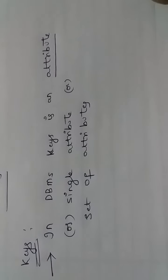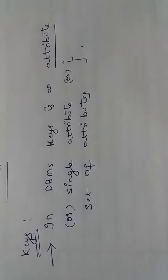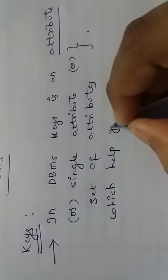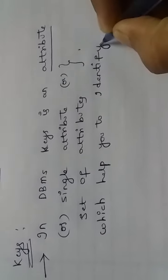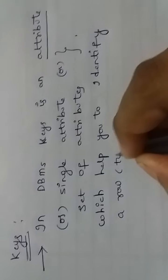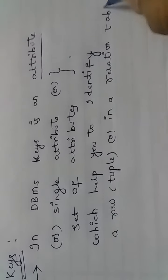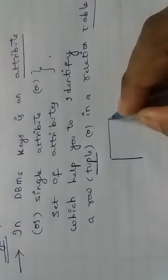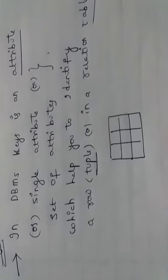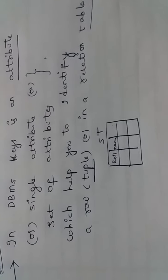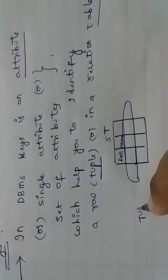Why are we using attributes? Attributes help you to identify a row. A row means a tuple in a relation table. For example, we are taking the student table. The student table contains fields like roll number, name, and so on. One particular row is called a tuple, and the total table is called the relation table.